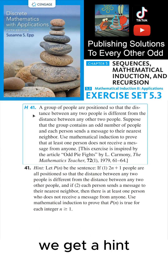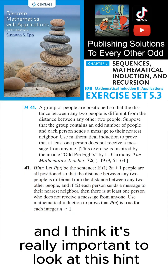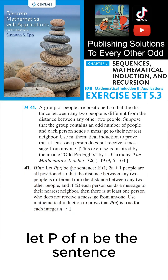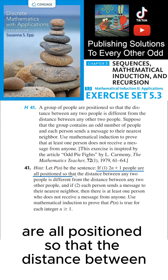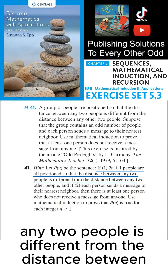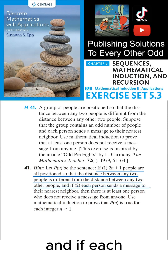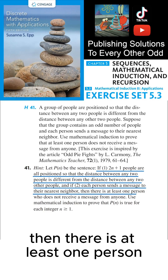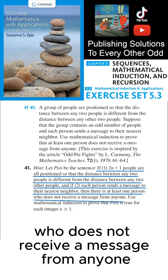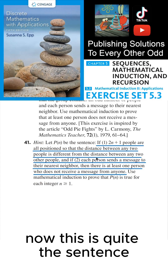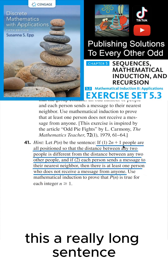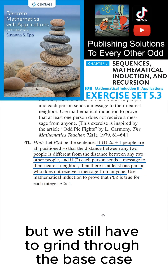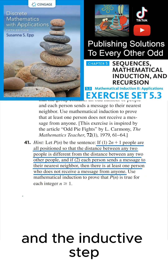In the back of the textbook we get a hint, and it's really important to look at this hint. It says: let P(n) be the sentence 'if 2n+1 people are all positioned so that the distance between any two people is different from the distance between any two other people, and if each person sends a message to their nearest neighbor, then there is at least one person who does not receive a message from anyone.' This is quite the sentence, but we still have to grind through the base case and the inductive step.